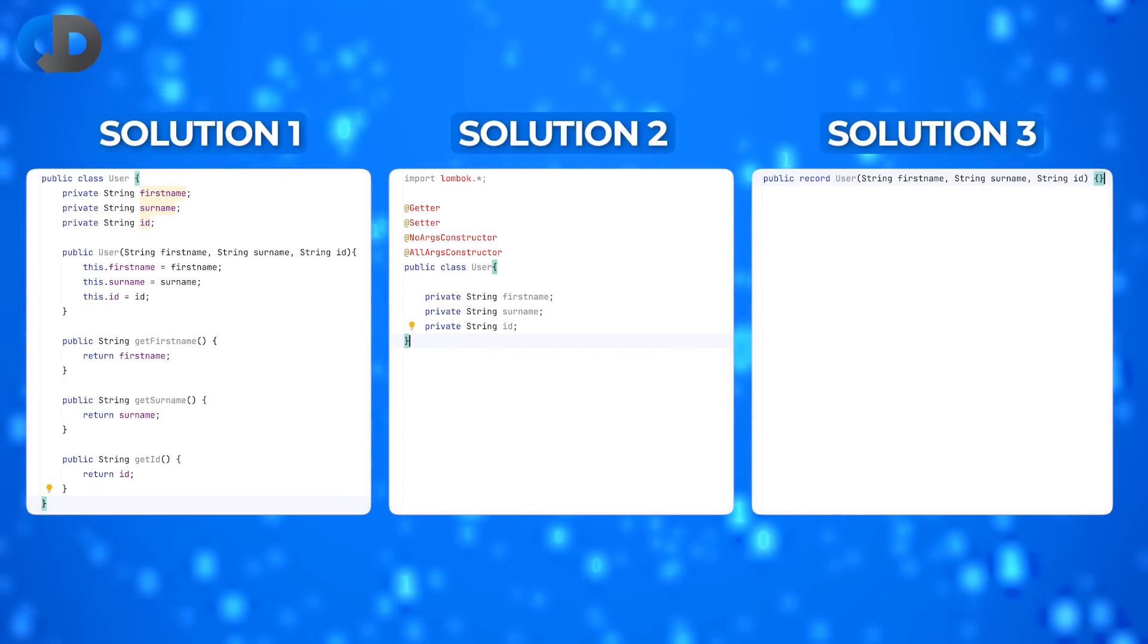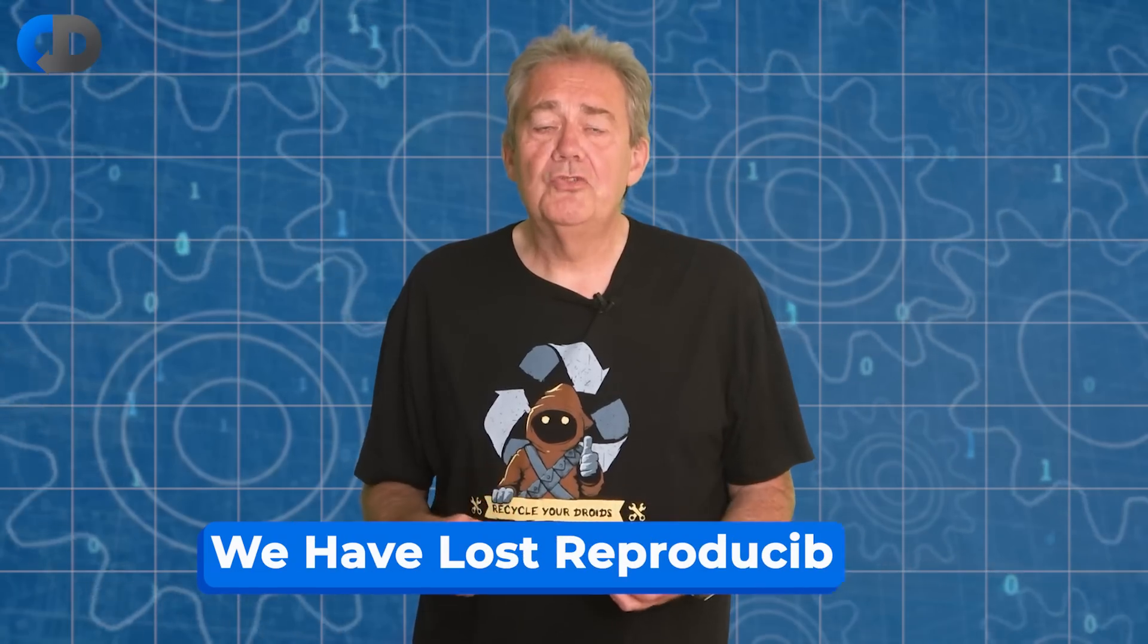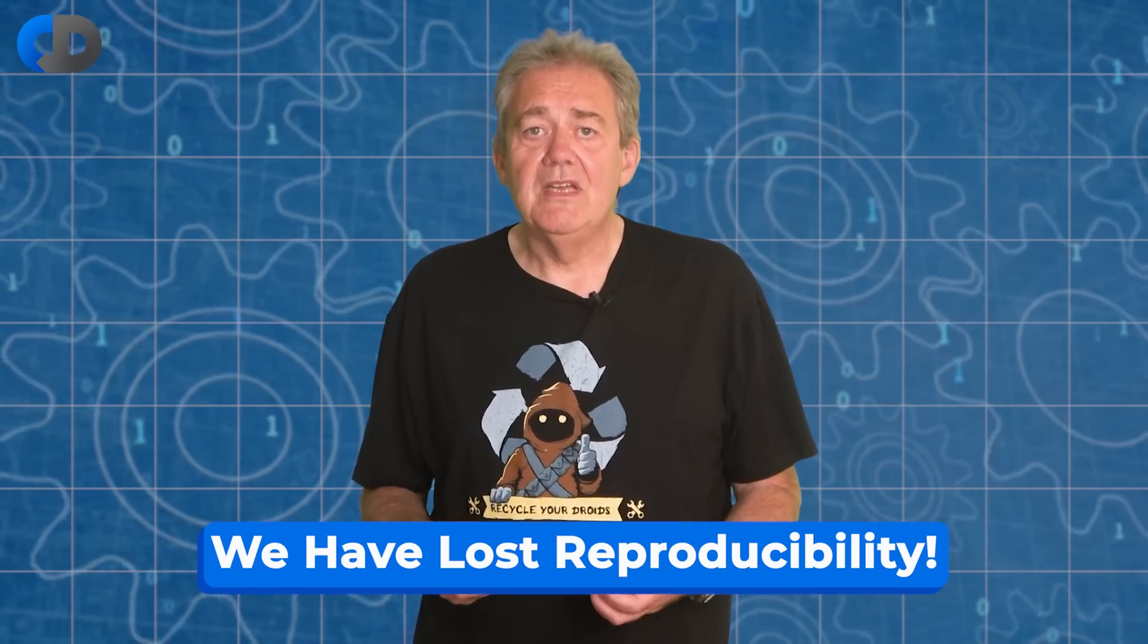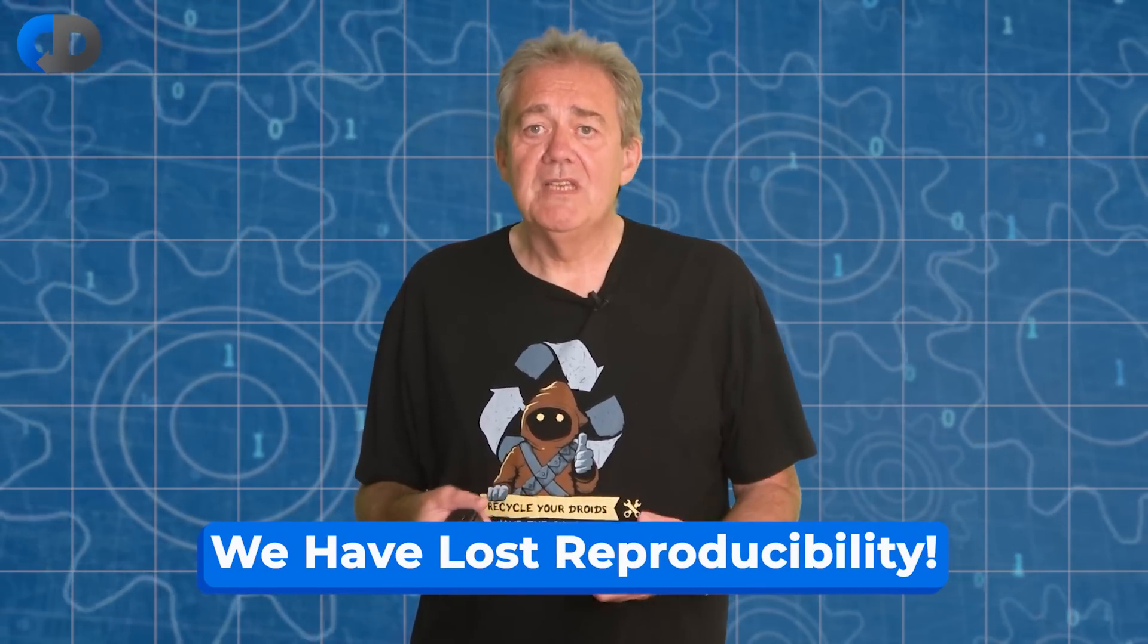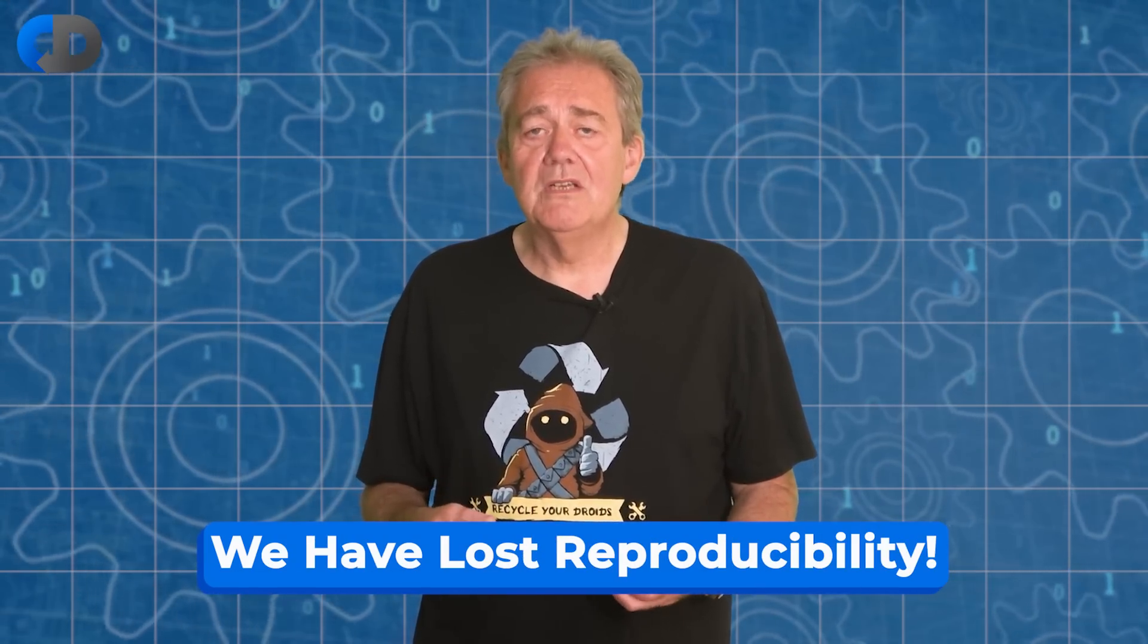If you ask it to do it again it generates it from scratch again, often doing things differently each time. So we've lost reproducibility and with it the ability to correct missteps and grow complex systems incrementally.